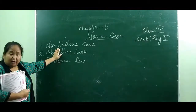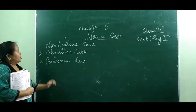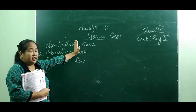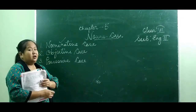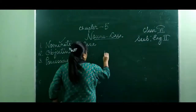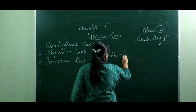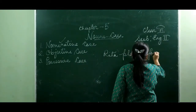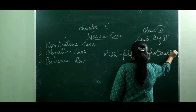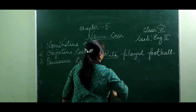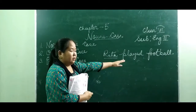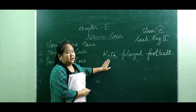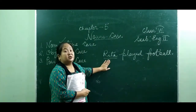First of all, what is nominative case? When the noun is used as a subject of a verb, it is said to be in the nominative case. For example, 'Rita played football.' Here, the noun Rita is the doer of the action. So in other words, when the noun is the doer of the action, that noun is said to be in the nominative case.